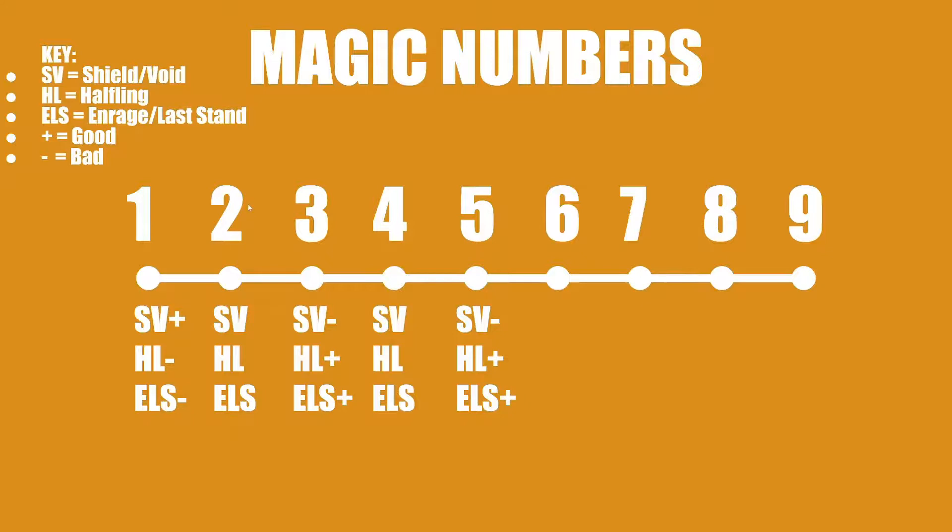Enrage/Last Stand five goes all the way up to eight. It is kind of a normal number, but this massive increase in damage output just completely changes it if they don't have resistances. If they do, Enrage/Last Stand isn't going to be as useful. The other numbers, evens are normal.